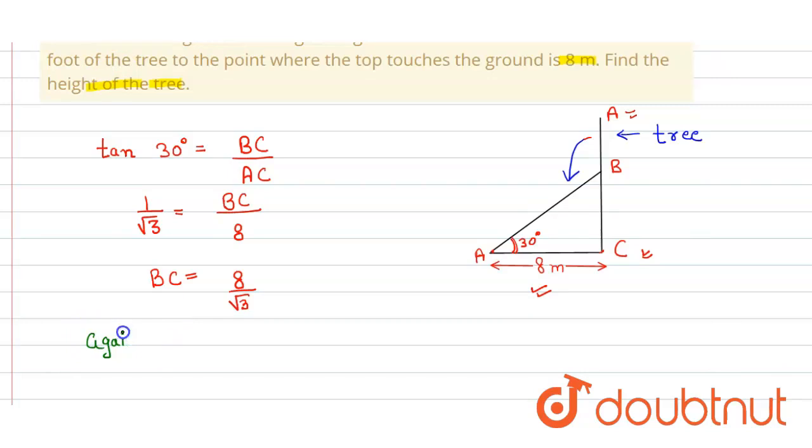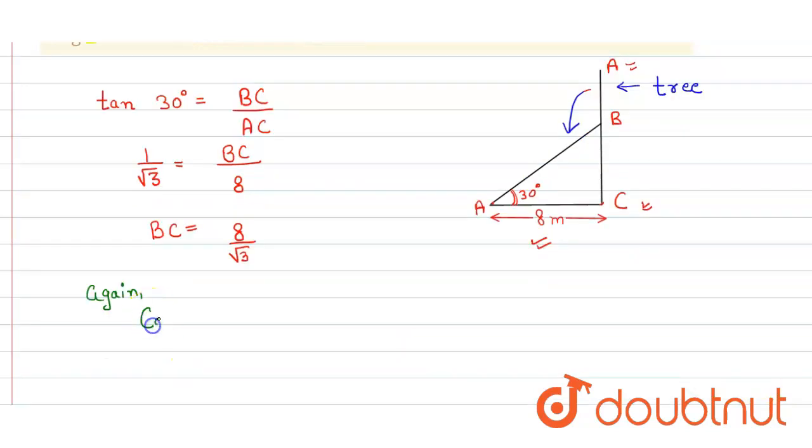So again we apply the trigonometric function. Now we take the cos function. Cos 30 degrees is equal to base upon hypotenuse. So base is AC and hypotenuse is AB. We have to find the value of AB.